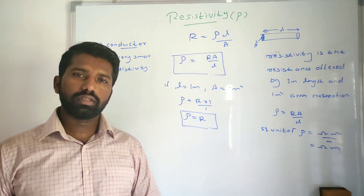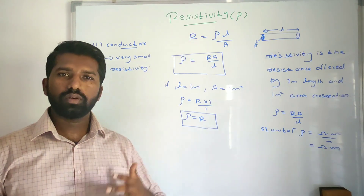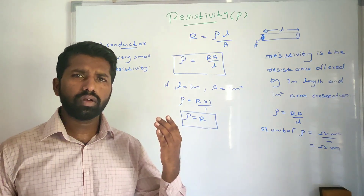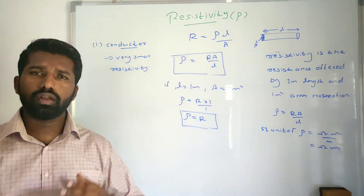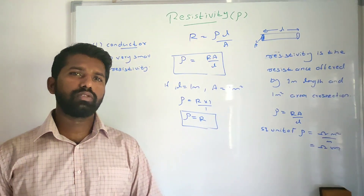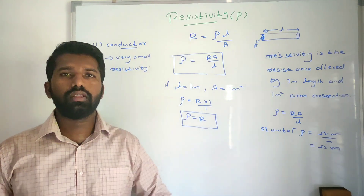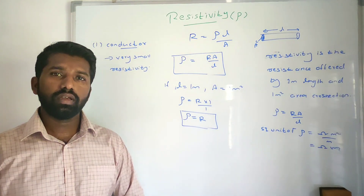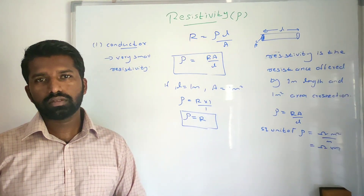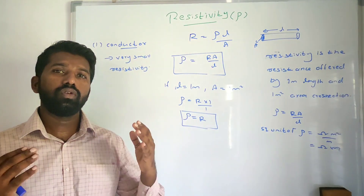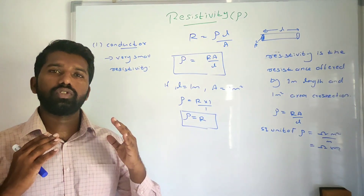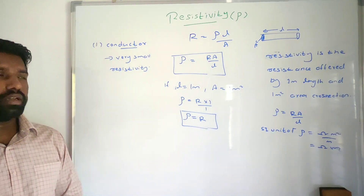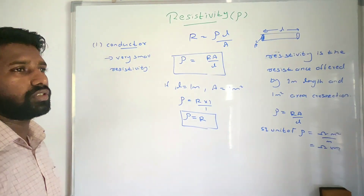Less resistivity means less resistance, so for long distance transmission a very less amount of electrical energy is lost in the form of heat. Other conductors like silver, gold, and platinum offer even lesser resistivity than copper and aluminium, but we are not using these materials for current conduction because gold, silver, and platinum are costly materials and not easily available.